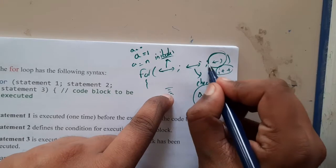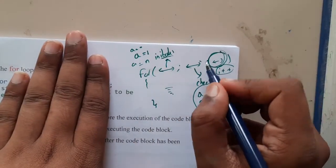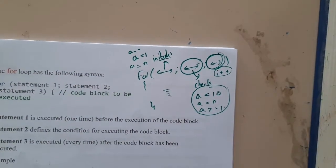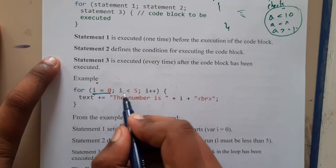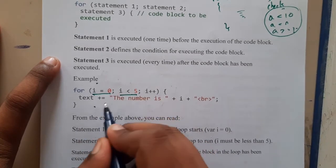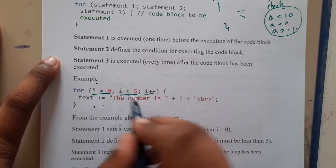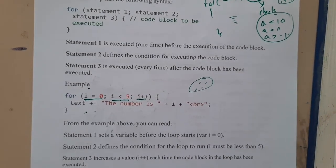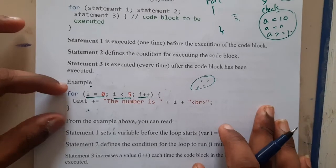At the end you perform the increment operation. All three statements — initialization, condition, and increment — are not mandatory. You can skip them: you can initialize outside the loop, write an if-statement inside for the condition, and increment inside the loop body. Even an empty for loop with only semicolons can run. But keep that aside for now — let's take a practical example.